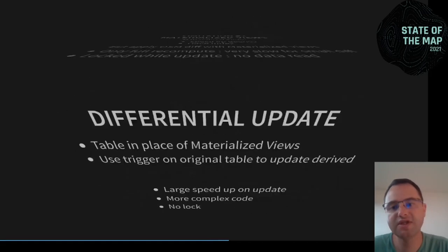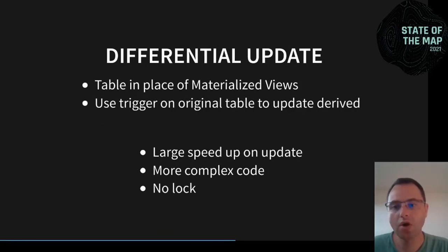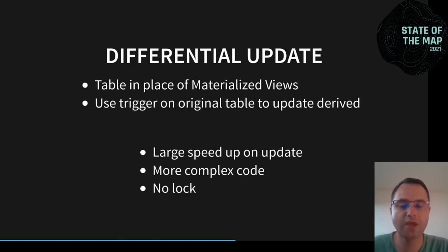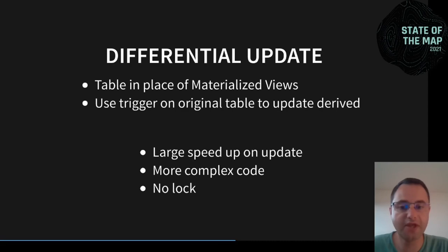So we cannot use materialized views and have to drop them and replace them with something else. Instead, we use simple tables: the same query as the materialized view is used and the result is saved in a table. When we want to update it, we use a trigger on the original table to perform a differential update of the generalized table. This greatly speeds up updates. The trade-off is that we have to write code to update the generalized data.